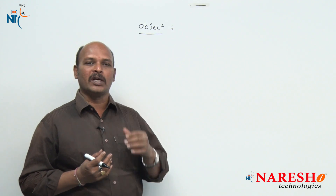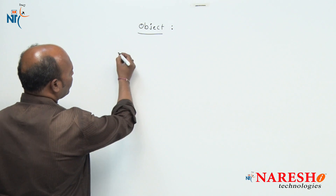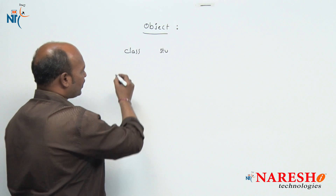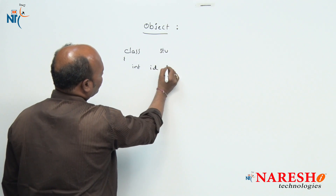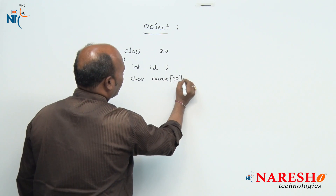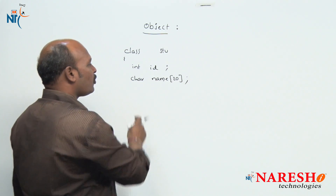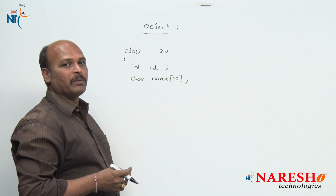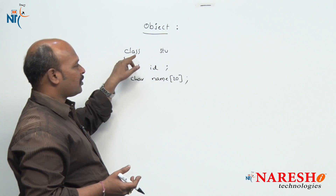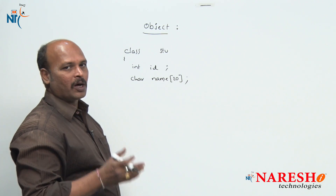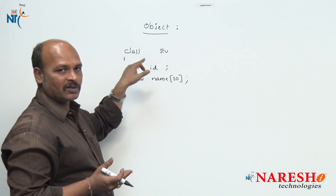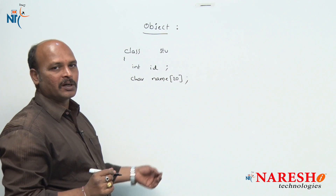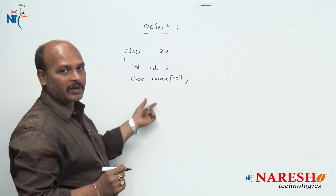For example, I am going to declare a class like this: class Student with int id and char name as data members. Since I have not used any access specifier, by default all members become private. By default the class visibility label or access specifier is private, so the compiler treats them as private members.